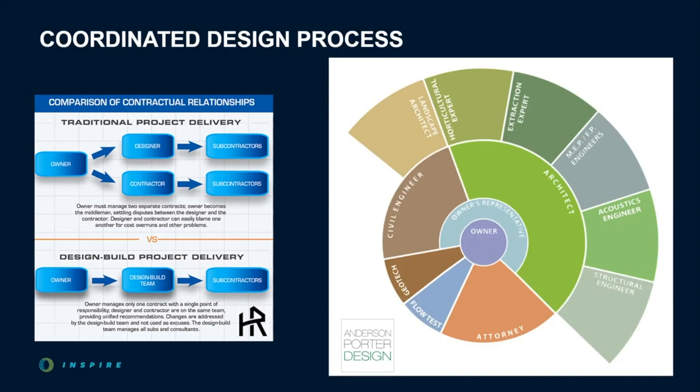By having the right professionals in place, with the owner in the middle, owner's representative surrounding them — or construction manager role — followed by the architect and the other engineers and sub-consultants, and ultimately contractors, all coordinated together, allows you to lock in a guaranteed maximum price when possible, limit your risk, avoid change orders that can be very costly, and avoid work that needs to be redone. There can be huge challenges with projects moving so fast, and making sure that all the bases are covered up front so budgets and timelines don't get inflated is extremely important.